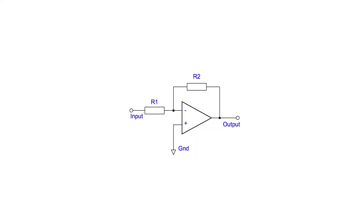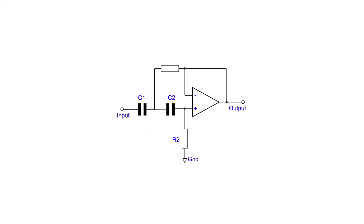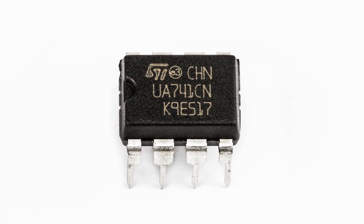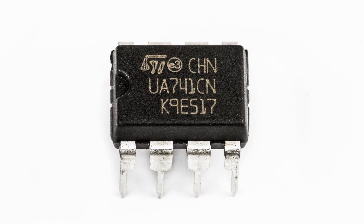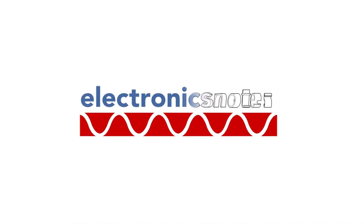Operational amplifiers provide exceedingly high levels of gain, and therefore they are virtually always used with feedback. In this way they can form the basis of a whole variety of circuits — from amplifiers to mixers, filters to oscillators, differentiators to integrators, and a whole lot more. They are probably one of the most versatile analogue circuit blocks available.